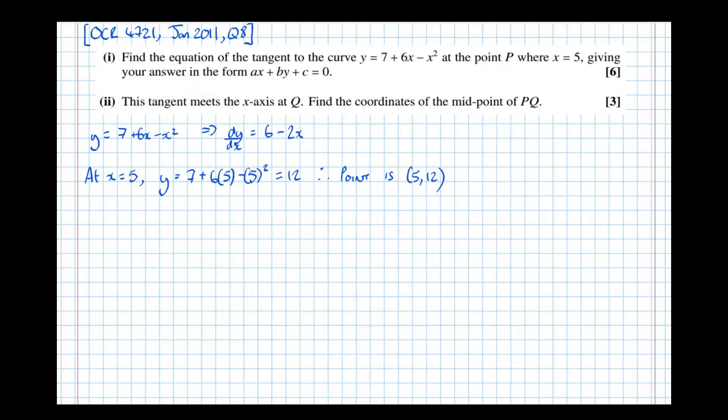Now going back up the line, the gradient, we've got an expression for it, but we can actually find a number for it by substituting in the x coordinate. We know that x is 5, so at x equals 5, dy by dx must be 6 minus 2 lots of 5, which is equal to minus 4.